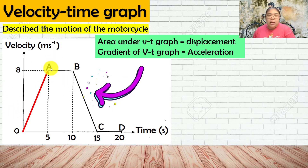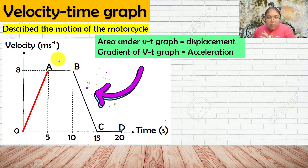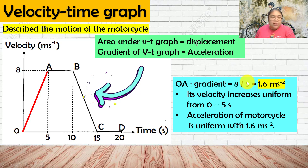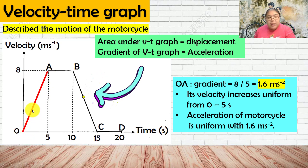For the VT graph, looking at the first part from zero to A: the velocity increases. We check the gradient — it is 8 over 5, giving 1.6 m/s². At any point along this straight line, the gradient will be the same, so the acceleration is a constant 1.6 m/s² throughout.